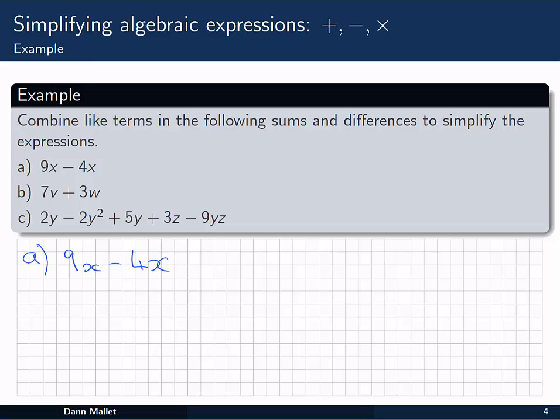The expression that we have in part a is a difference, the difference of 9x and 4x. 9x and 4x are like terms because they're just different multiples of the variable x, so we can combine them through subtraction. So what we need to do is think about if we've got 9 of something and we want to take away 4 of them, what are we left with? Well that's not too hard. We should be left with 5 of that thing. In this case 5x.